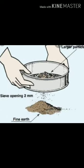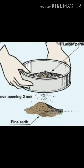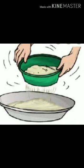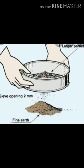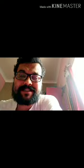During sieving, the larger components are left behind in the sieve while the smaller components pass through the pores and collect in the bowl. Sieves with different pore sizes are available depending on the size of the components to be separated. For example, sieves are used to remove bran from wheat before making flour. At construction sites, sieves with large pores are used to separate stones and pebbles from sand.